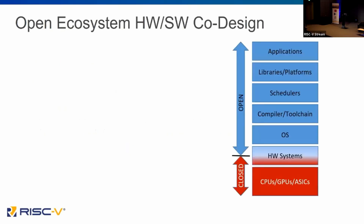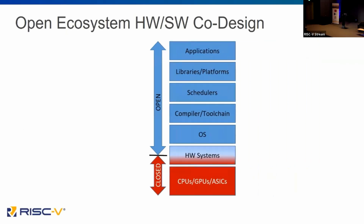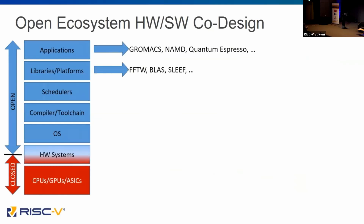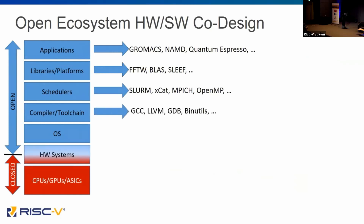When it comes to the open HPC ecosystem today, what I'm showing here is a collection from applications down to hardware and how those interact with systems today. All the things in blue are open or have open components, including GROMACS, different libraries like FFTW or BLAST, schedulers like Slurm, LLVM or GCC for toolchain, and even all the way down to Linux.